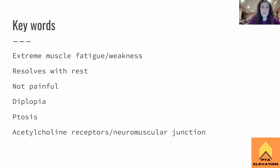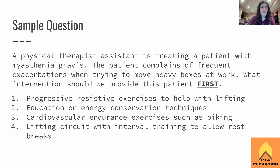Sample question: A physical therapist assistant is treating a patient with myasthenia gravis. The patient complains of frequent exacerbations when trying to move heavy boxes at work. What intervention should we provide this patient first? One: progressive resistive exercises to help with lifting. Two: education on energy conservation techniques. Three: cardiovascular endurance exercises such as biking. Or four: a lifting circuit with interval training to allow rest breaks.